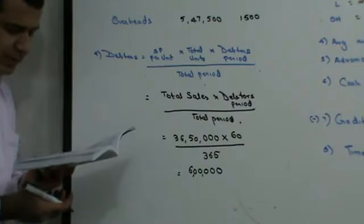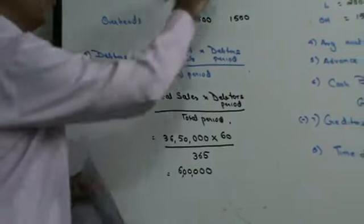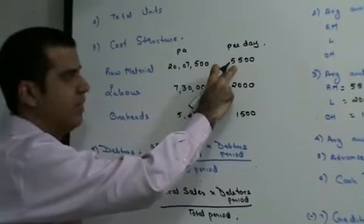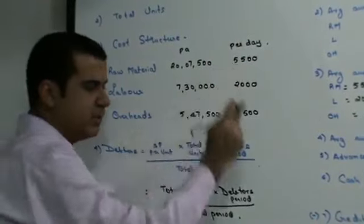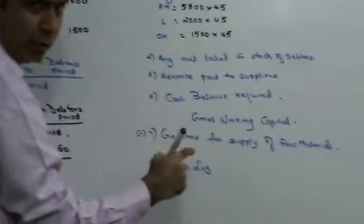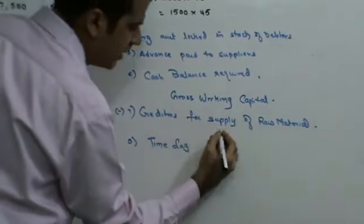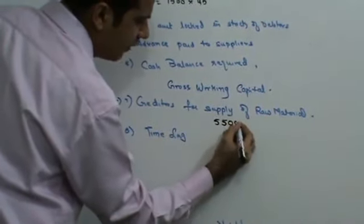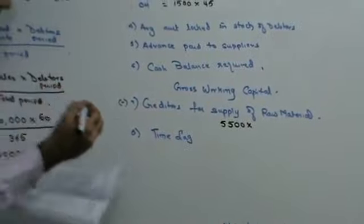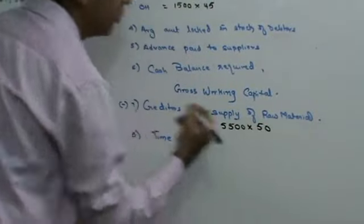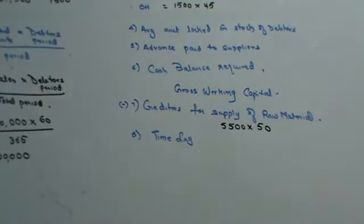Credit period enjoyed by suppliers is 50 days. Raw material, we know, is 5,500 rupees per day. So creditors is going to be 5,500 into credit period is 50 days. So into 50.